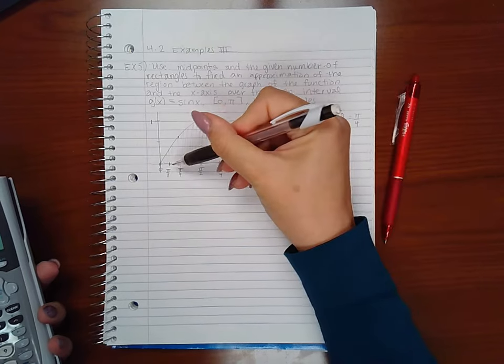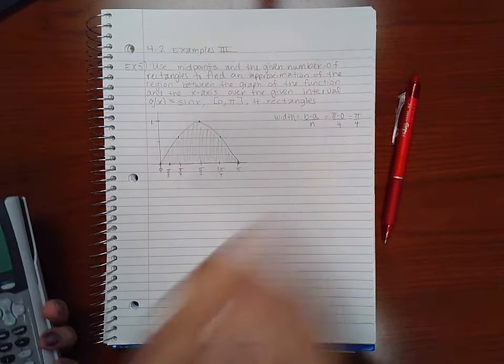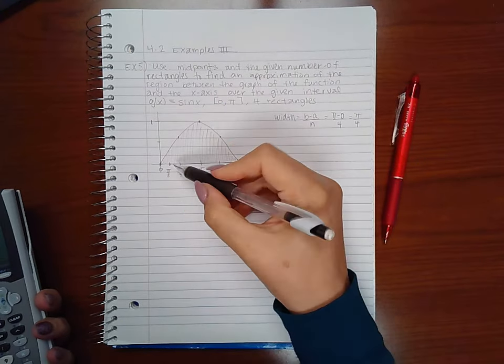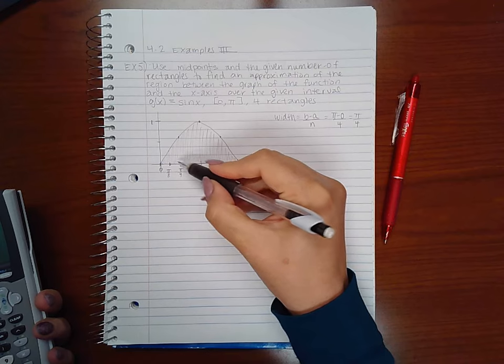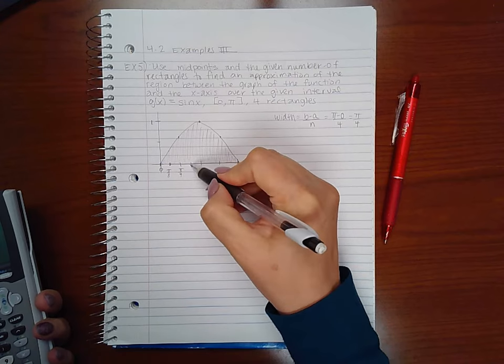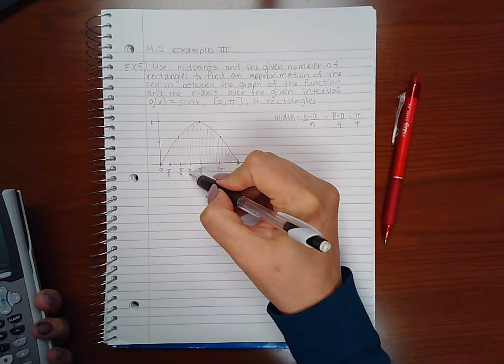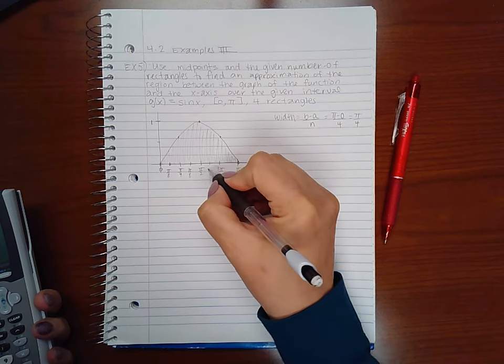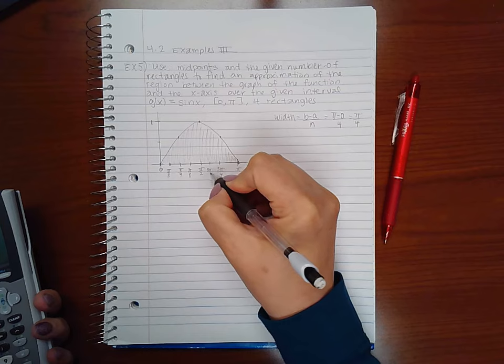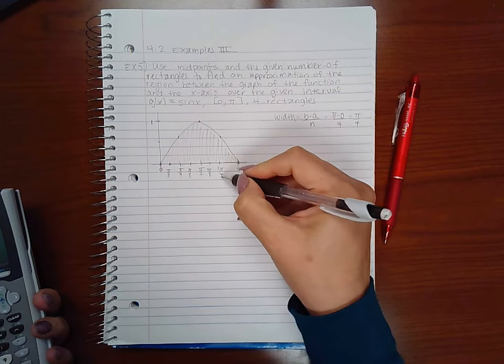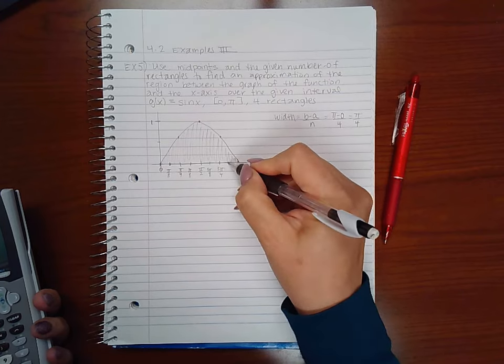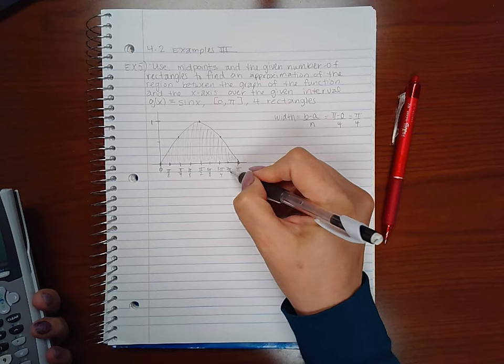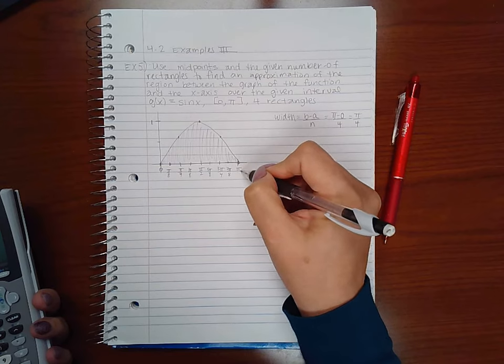And actually you can just keep increasing by π/8 and you should get all the endpoints. So π/8, 2π/8 is π/4. This would be 3π/8. 4π/8 is π/2. This would be 5π/8. 6π/8 reduces to 3π/4. 7π/8 would be here in the middle and then 8π/8 is π.